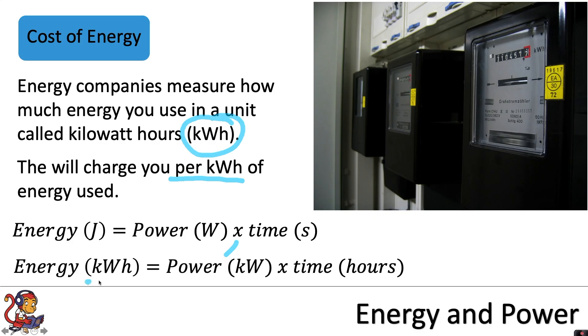Energy in kilowatt hours equals power in kilowatts—and one kilowatt equals 1000 watts—multiplied by time in hours. They use this equation because you're using lots of power for a long time, so they find it easier to calculate everything in kilowatt hours instead of joules, and they will charge a certain amount per kilowatt hour.